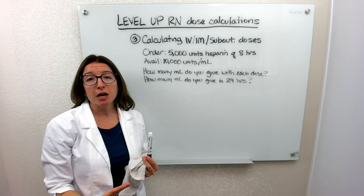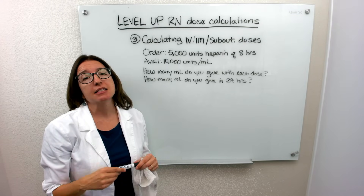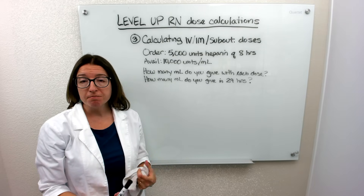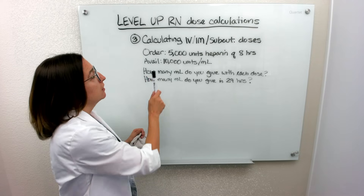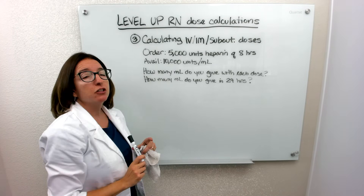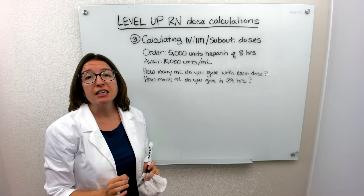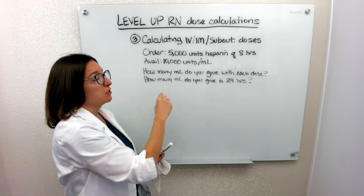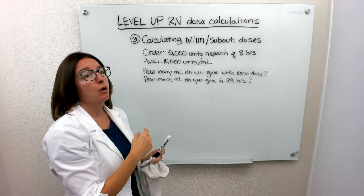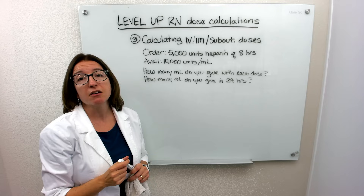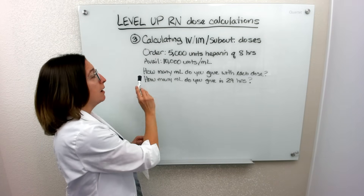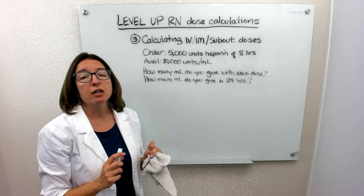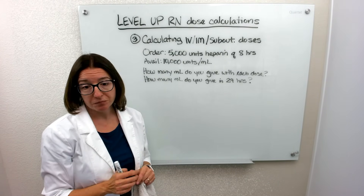The third type of problem I'm going to work through is calculating an IV, IM, or subcutaneous dose. In this particular example, the doctor has ordered 5,000 units of heparin to be given every eight hours. What we have on hand is 10,000 units per milliliter — so per milliliter of liquid there are 10,000 units of heparin. We want to know how many milliliters to give with each dose, and then how many milliliters we're going to give over a 24-hour period.